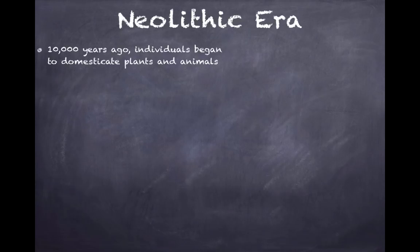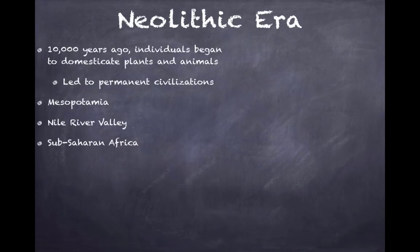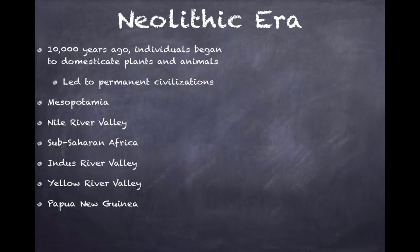Jumping over to the Neolithic era — about 10,000 years ago — individuals began to domesticate plants and animals. This led to permanent civilizations in places like Mesopotamia, the Nile River Valley, Sub-Saharan Africa, the Indus River Valley, the Yellow River Valley, Papua New Guinea, Mesoamerica, and the Andes. Be able to identify each of these regions on a map.